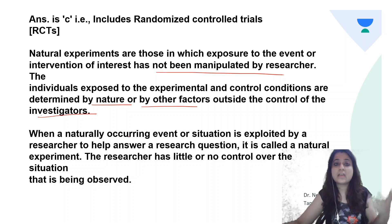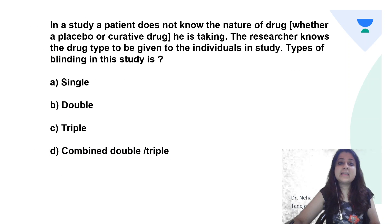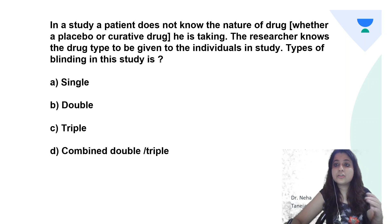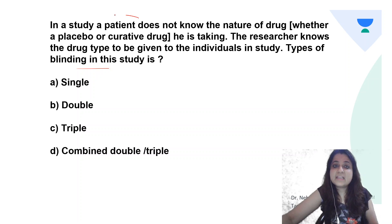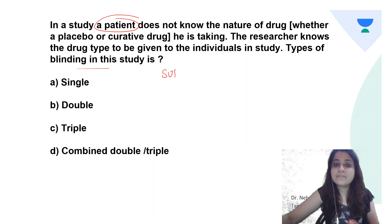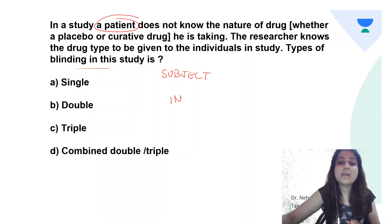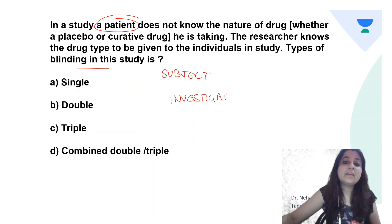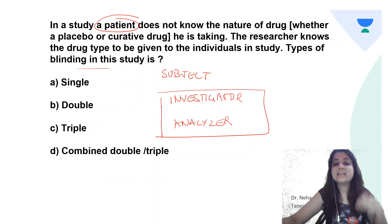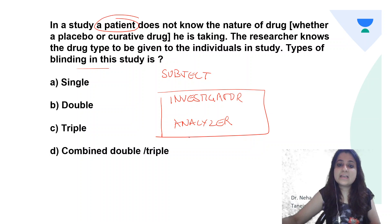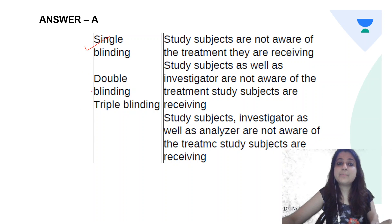Next: in a study, a patient does not know the nature of the drug he is taking, but the researcher knows the drug type to be given. What type of blinding is this? In any research study, three people are involved: the subject, the investigator, and the analyzer. Most often the investigator and analyzer are the same person, so we have subject, investigator, and analyzer.